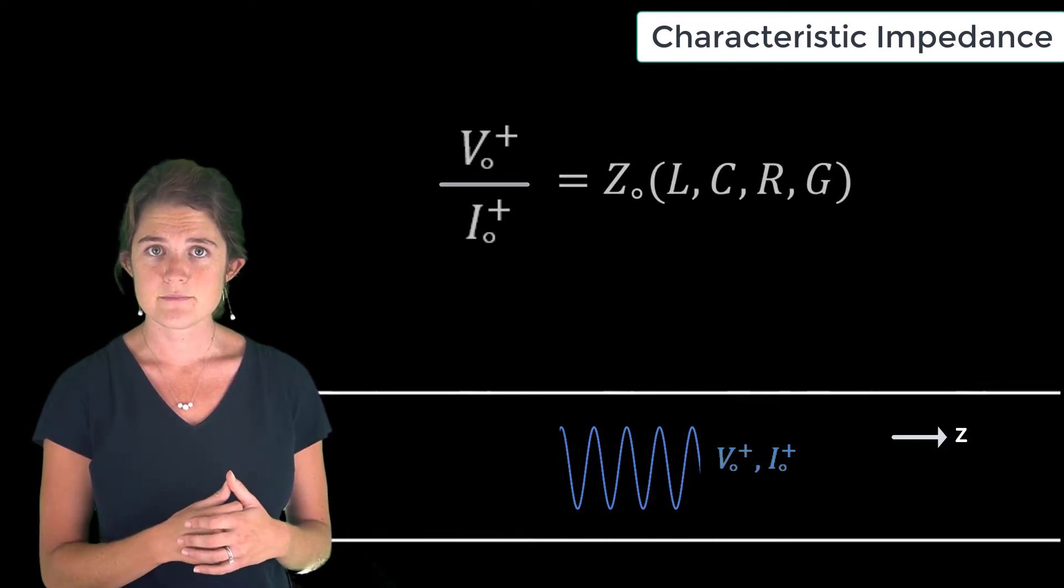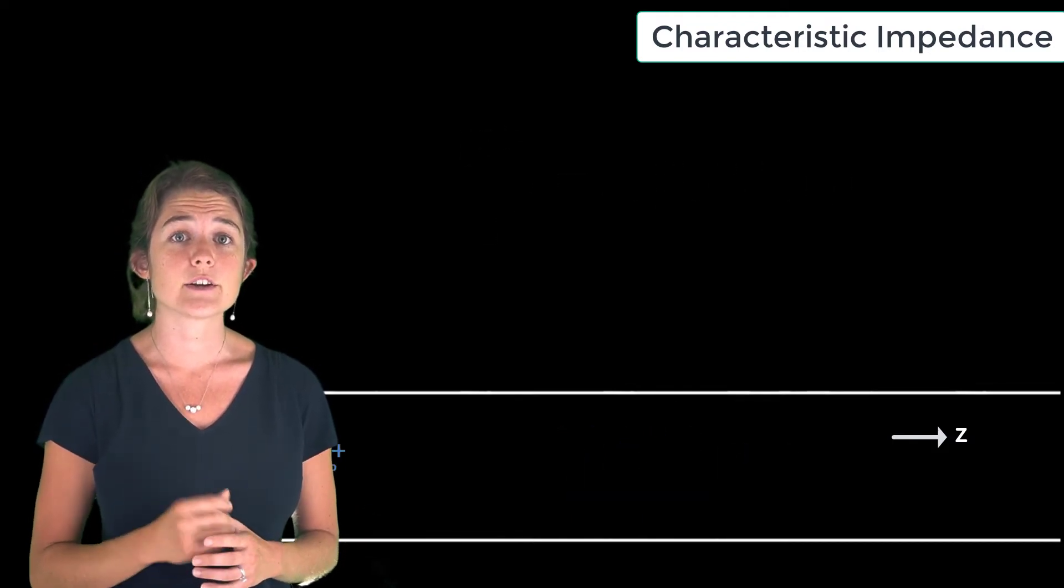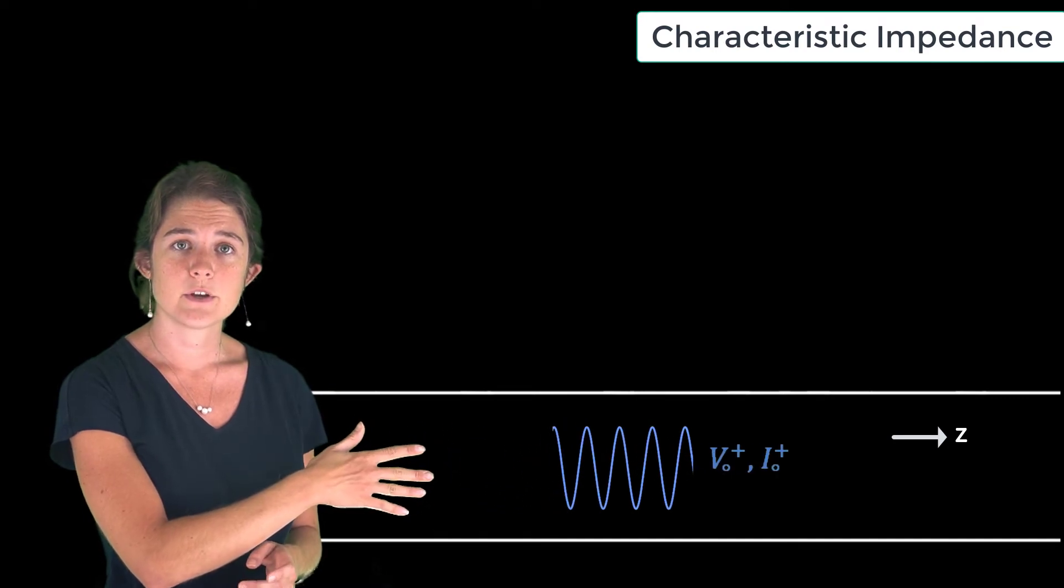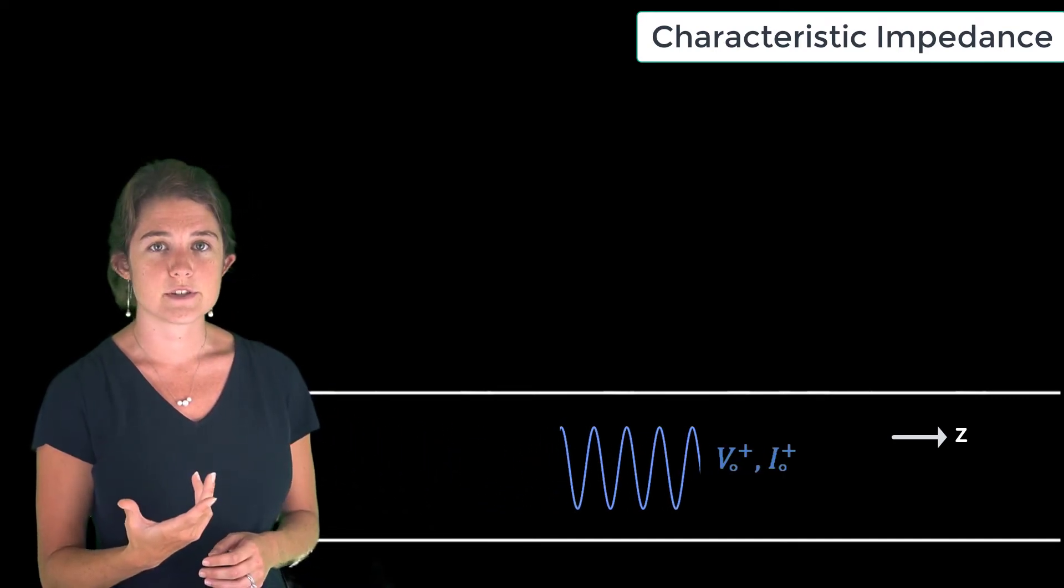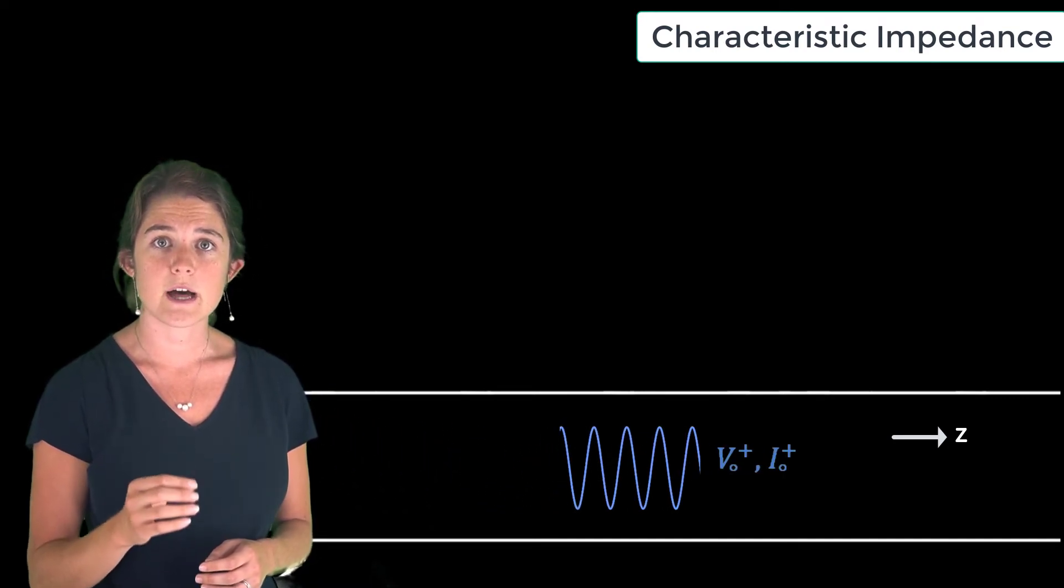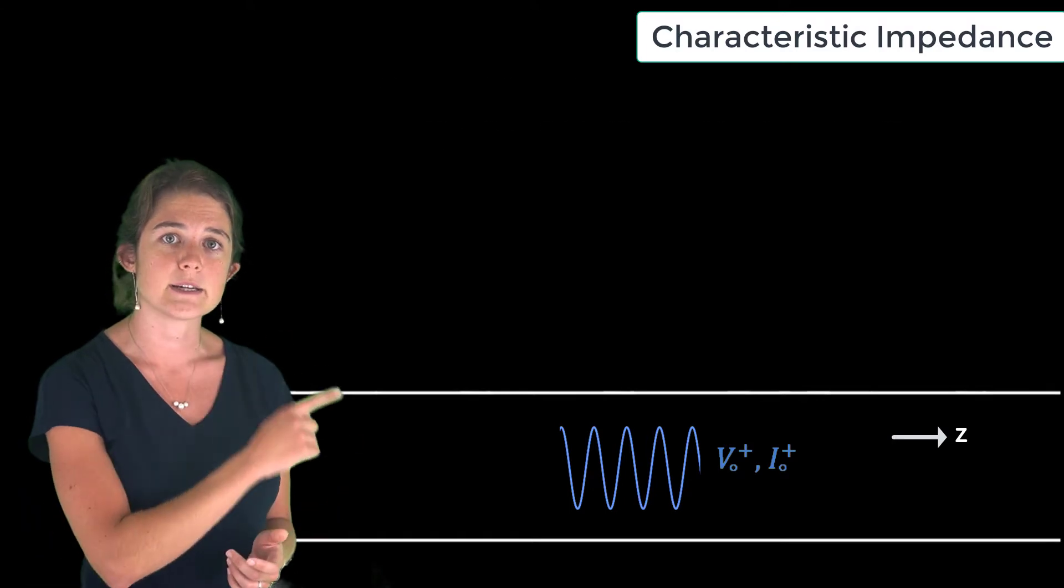To show that this is so, let's look at a forward propagating signal. We know from our general solutions to the wave equations that this signal will have voltage and current that can be expressed like this.